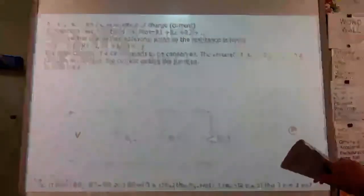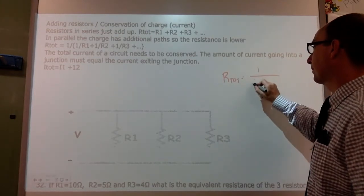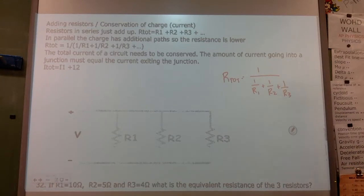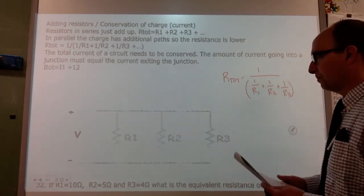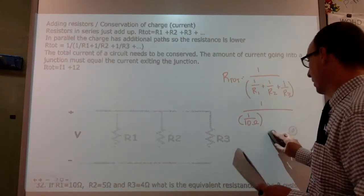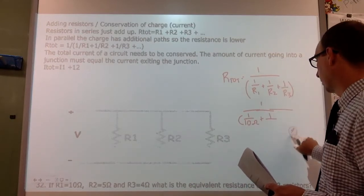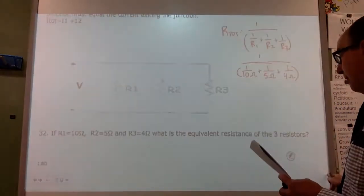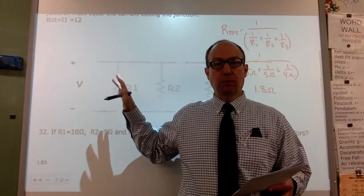I have three resistors in parallel: R1 is 10, R2 is 5, R3 is 4. The total resistance is one over the quantity (one over R1 plus one over R2 plus one over R3). In the calculator, put the bottom part in parentheses: one over (one over 10 plus one over 5 plus one over 4). This gives 1.8 ohms — so a 1.8-ohm resistor would have the same effect as those three combined.